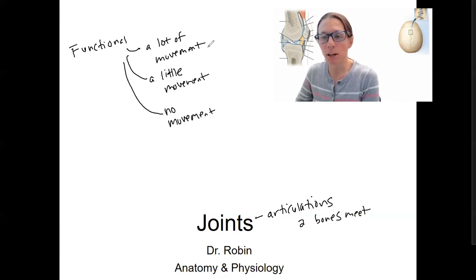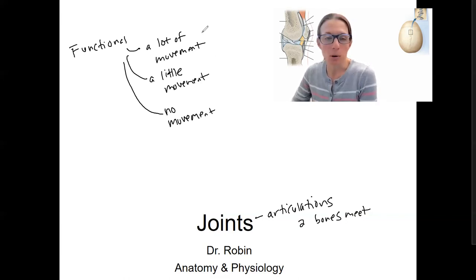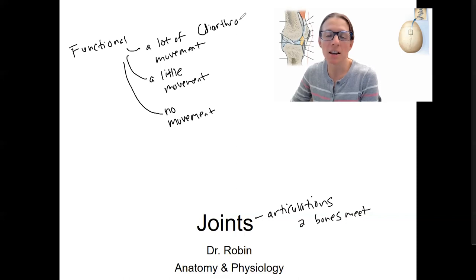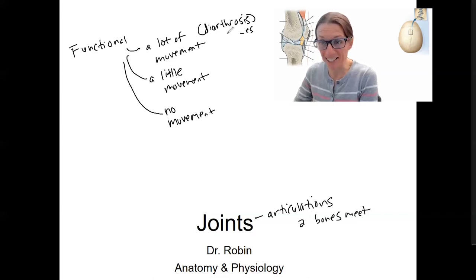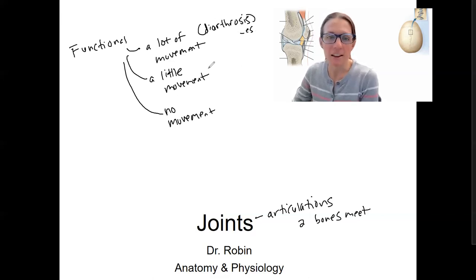We have more complex names for each of these. A lot of movement is going to be diarthrosis — diarthrosis is singular, diarthroses would be plural. These are highly mobile joints. The word arthrosis sounds like it has arthritis in there — arthro refers to joint, so it's kind of helpful to see that in there.